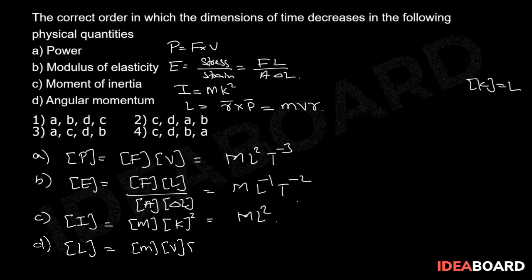Now if we take power of time in respect to dimension formulas, it is given as minus 3 for power, minus 2 for elasticity of modulus, 0 for moment of inertia, and minus 1 for angular momentum.